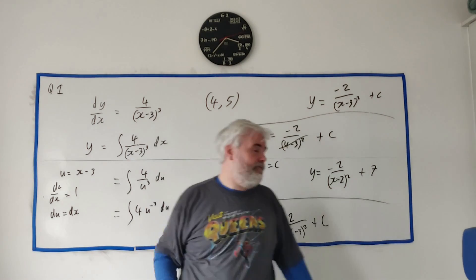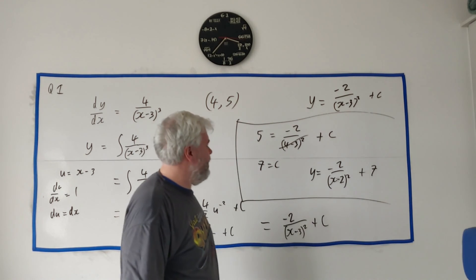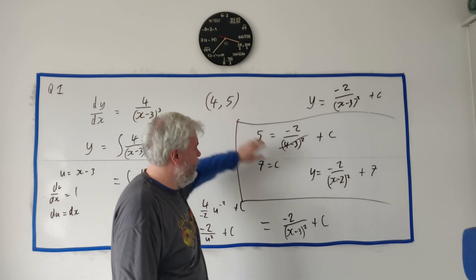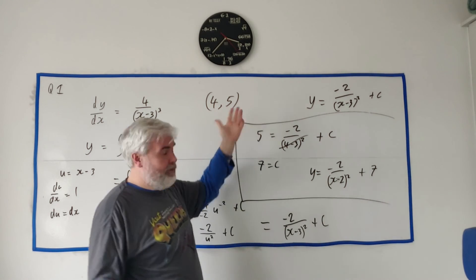Differentiate this, make sure it looks like this again. That won't help you with the 7 though. You can check that the 7 is right by putting this number in to this, and putting 4 into it and see if 5 comes up.